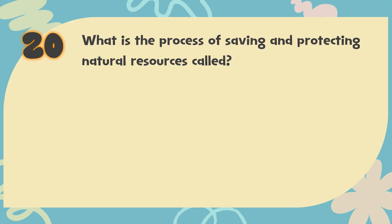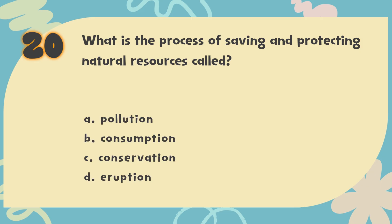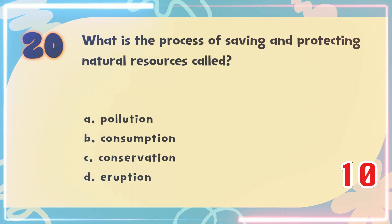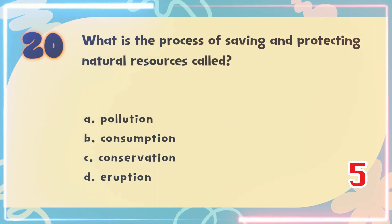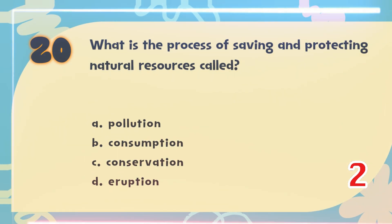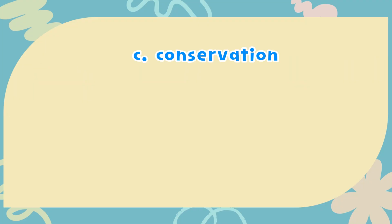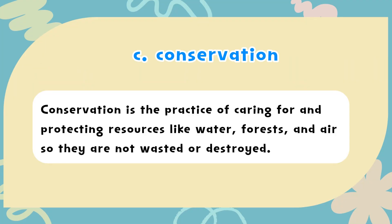Number 20. What is the process of saving and protecting natural resources called? The choices are: A. Pollution, B. Consumption, C. Conservation, D. Eruption. The correct answer is C. Conservation. Conservation is the practice of caring for and protecting resources like water, forests, and air so they are not wasted or destroyed.